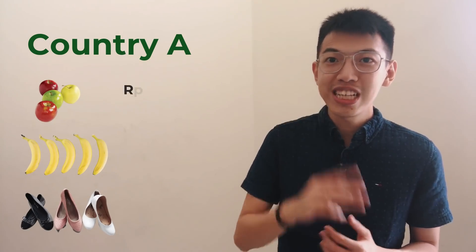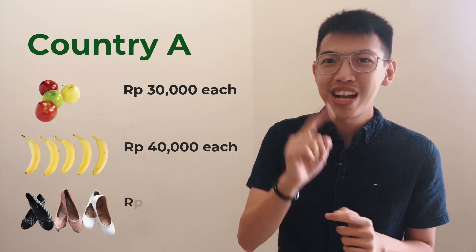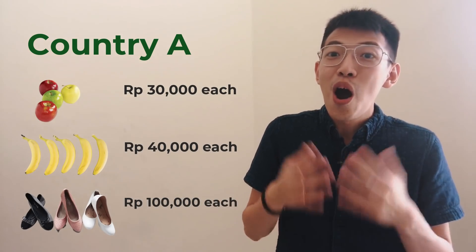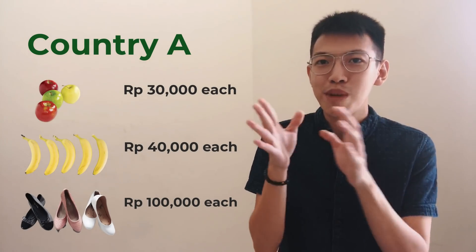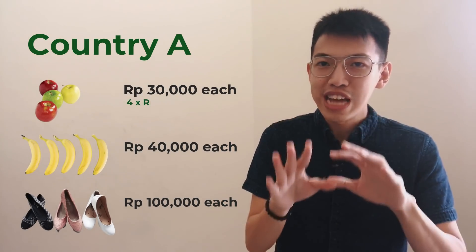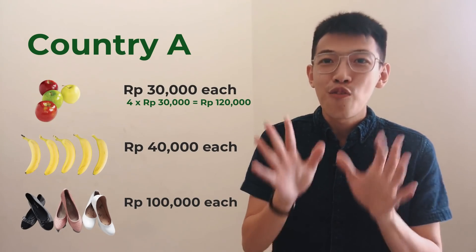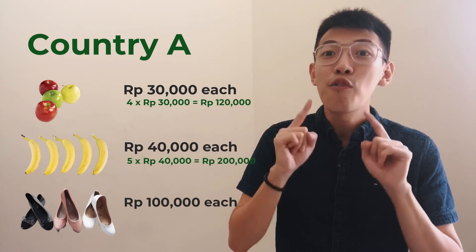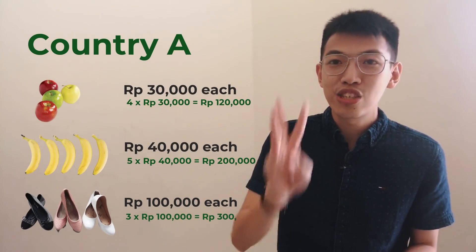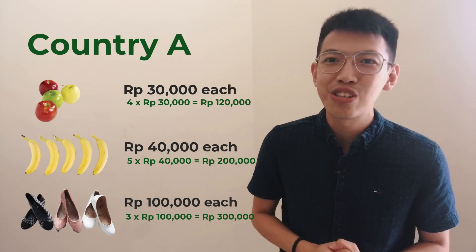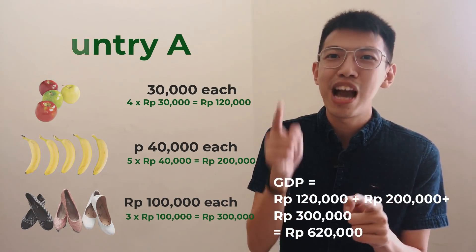Each apple is priced at 30,000 rupiah, each banana at 40,000 rupiah, and each pair of shoes at 100,000 rupiah. So what is the GDP of country A? Simply multiply the units by their market value and sum it all. Apples: 4 times 30,000 equals 120,000 rupiah. Bananas: 5 times 40,000 equals 200,000 rupiah. Shoes: 3 times 100,000 equals 300,000 rupiah. The total is 620,000 rupiah — that is the GDP of country A.